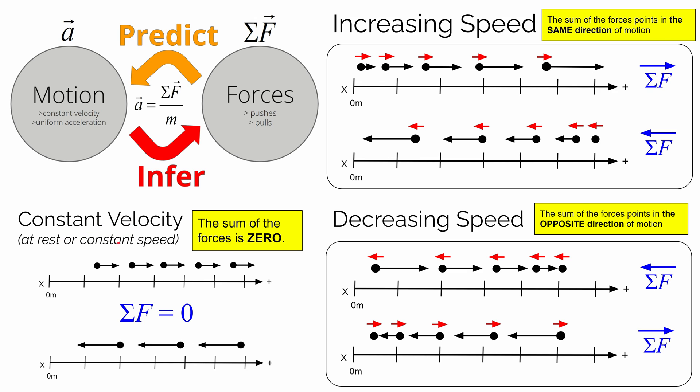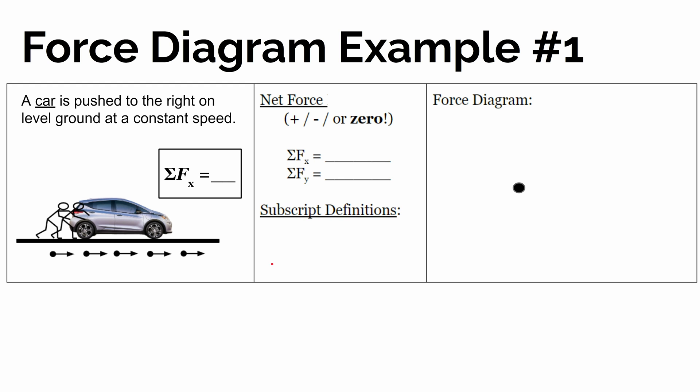Or if it's moving at a constant speed, it's going to stay moving at a constant speed, whether that's a constant positive velocity or a constant negative velocity. So let's put this stuff together to draw force diagrams for two situations.